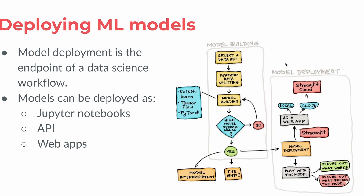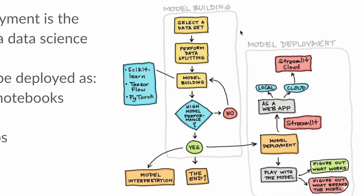In this illustration I've drawn, you can see that the machine learning model building process involves splitting your data, building the model, and assessing whether your model performance is satisfactory. If it is, you could perform model interpretation. If not, you could go back and improve the model. Aside from interpreting the model, you also want to deploy it, which allows non-technical end users to play with the model and provide feedback.